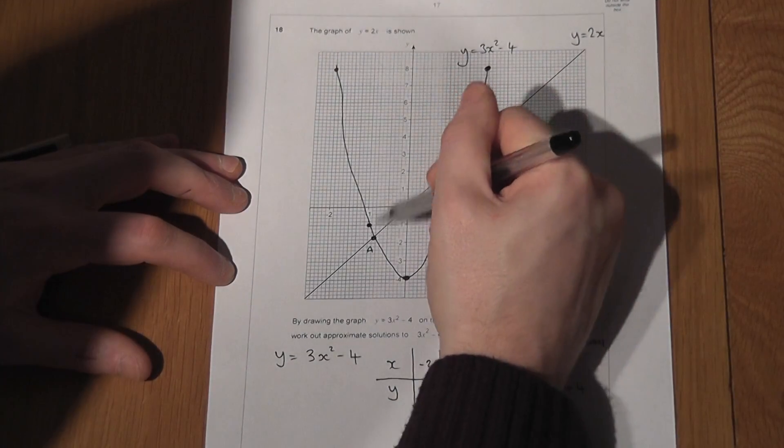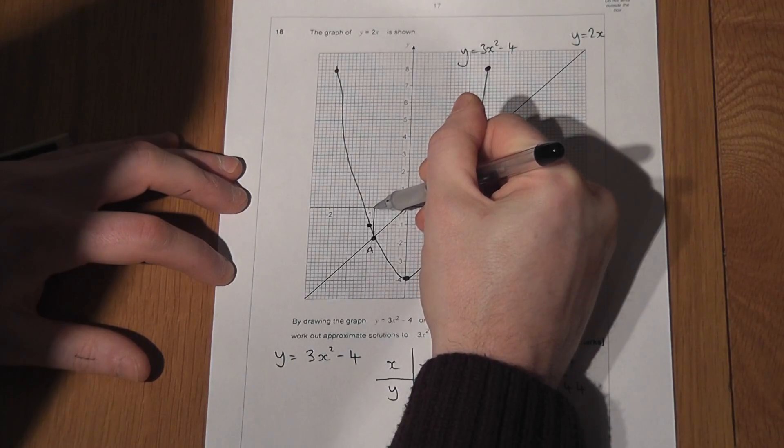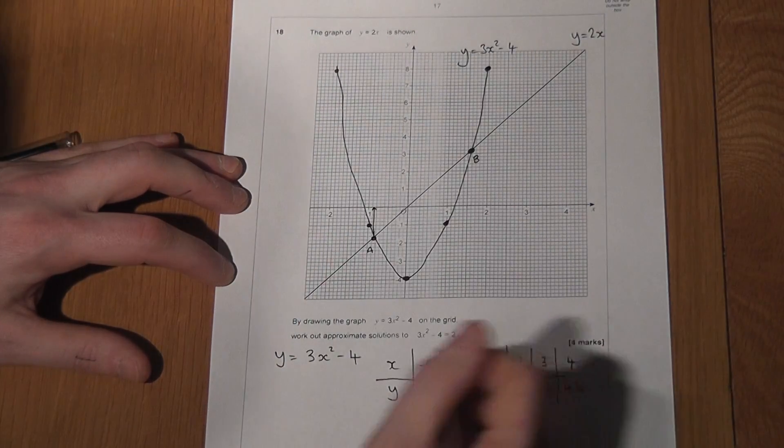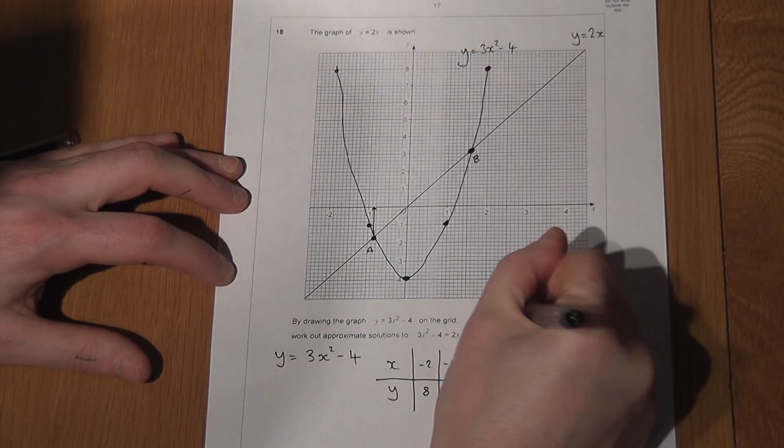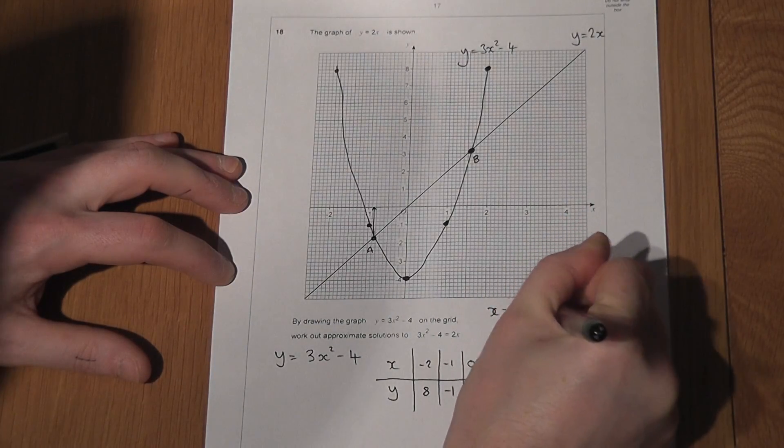So to work it out, I'll look at A and draw a line up from A. And if I look at my axes carefully, I find that the first value is at x is equal to minus 0.85.